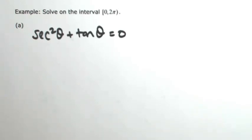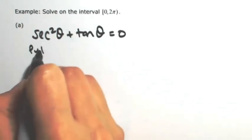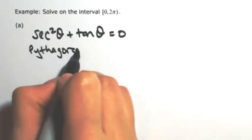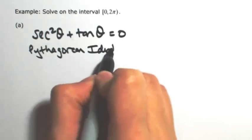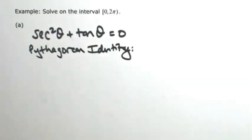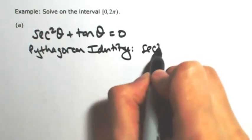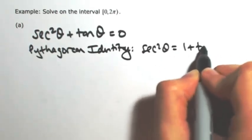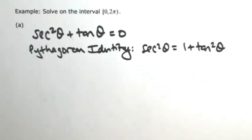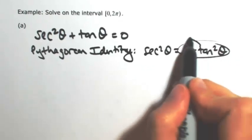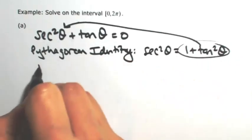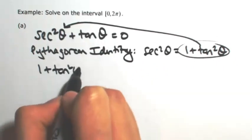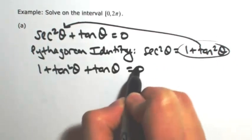When I see a secant squared of theta, my initial thought is going to a Pythagorean identity. So we have a Pythagorean identity that involves the secant squared of theta, and that one goes as 1 plus tangent squared of theta.